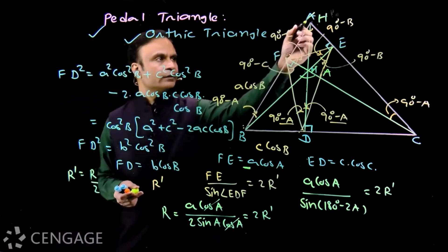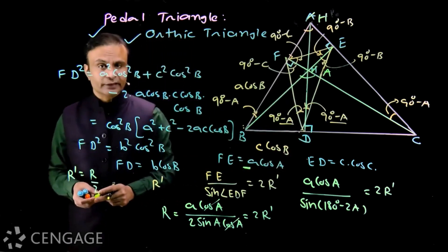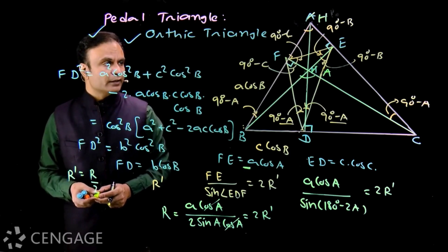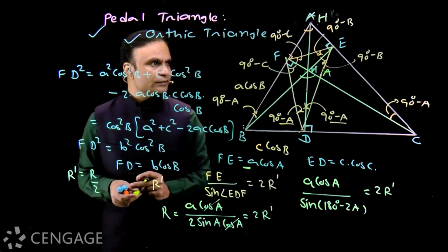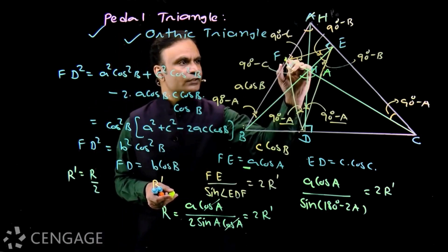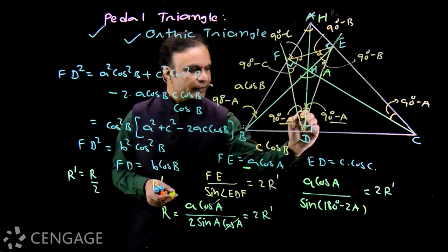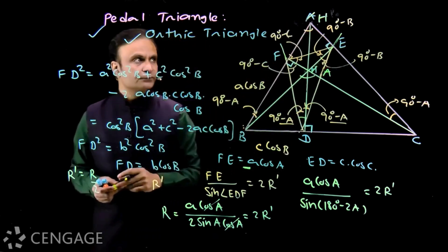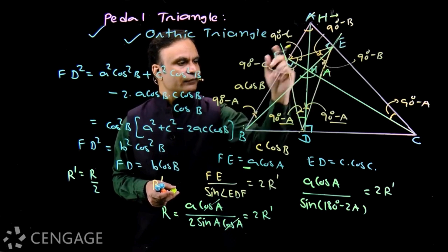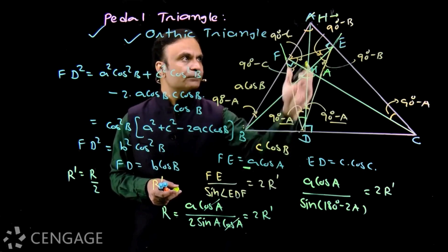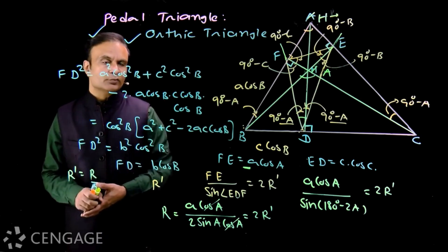In the obtuse case, the orthocenter H is the excenter of triangle DEF opposite to vertex D. A triangle has three excenters opposite its three vertices. At the excenter opposite vertex D, the external angle bisectors of angles E and F and the internal angle bisector of angle D all intersect. We will study excenters in detail in one of the coming videos.